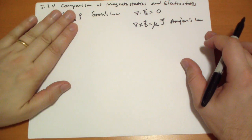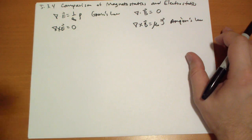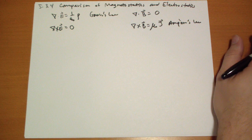So we call these Maxwell's equations for electrostatics and these are Maxwell's equations for magnetostatics.